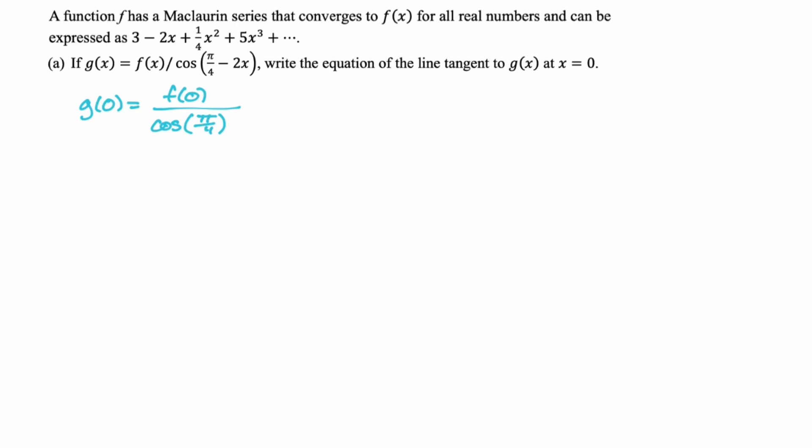For the sine and cosine of π/4, sometimes I'll use 1 over root 2 and other times root 2 over 2, depending on which is more convenient. To find f(0), we use the Maclaurin series structure: it's the Taylor series centered at 0, so the terms are f(0), f'(0)·x, f''(0)/2! · x², f'''(0)/3! · x³, and so on. So f(0) is just the first term, which is 3. Therefore g(0) = 3 over cos(π/4) = 3 over (1/√2) = 3√2.